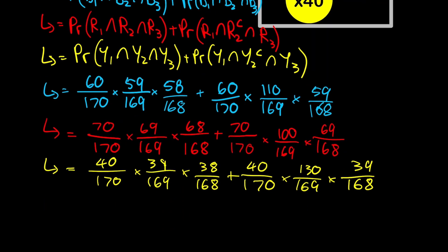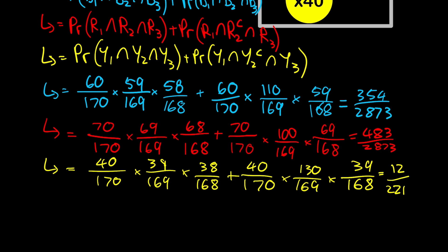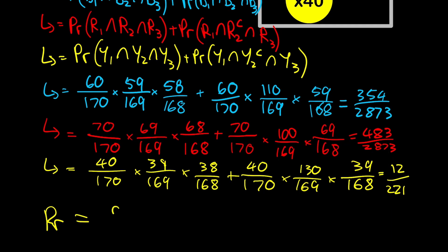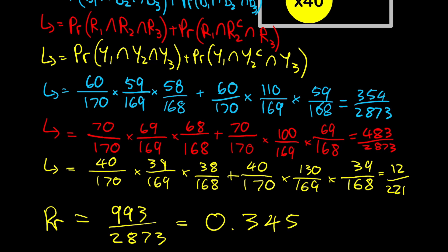Now we calculate each probability. The blue probability equals 354/2873, the red probability equals 483/2873, and the yellow probability equals 12/221. Summing all of these, our initial probability statement gives us 993/2873.